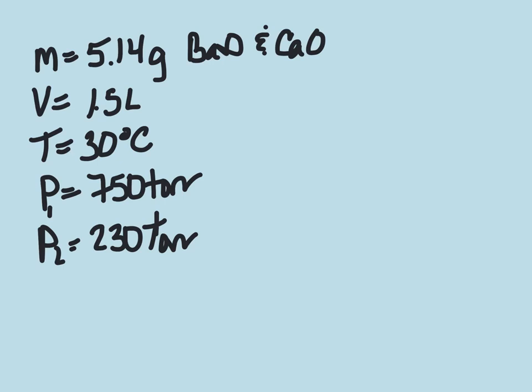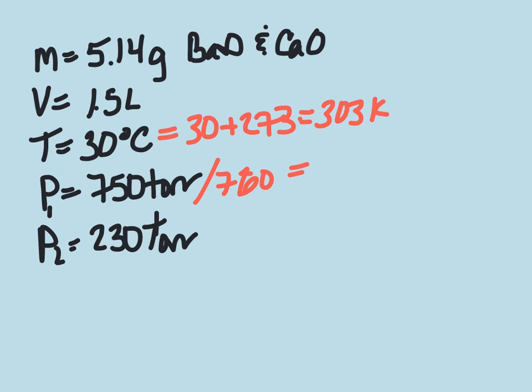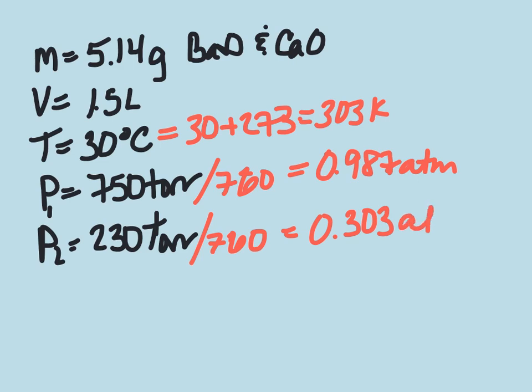First off, we want to make sure we convert anything into our standards. So our temperature, we need to convert into Kelvin. So 30 plus 273, which gives us a temperature of 303 Kelvin. We also want to convert our pressures by dividing by 760 in order to convert it into ATM. So our 750 torr turns into 0.987 ATM, and our 230 torr converts into 0.303 ATM.